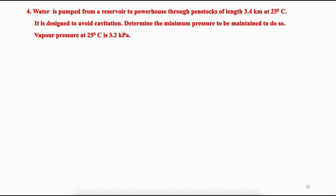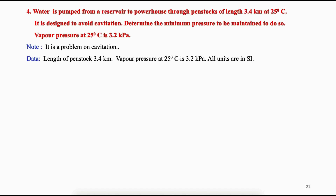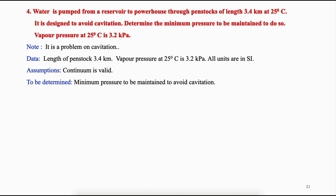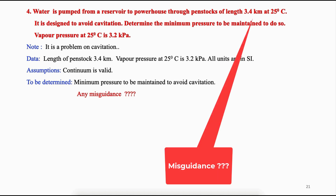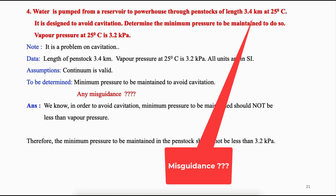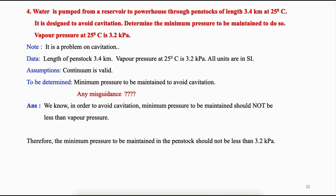Problem 4: Water is pumped from a reservoir to a powerhouse through penstocks of length 3.4 km at 25°C, designed to avoid cavitation. Determine the minimum pressure to be maintained. Vapour pressure at 25°C is 3.2 kPa. Note that the length of the penstock is redundant data — to avoid cavitation, only pressure matters. Therefore, the minimum pressure to be maintained in the penstock should not be less than 3.2 kPa.